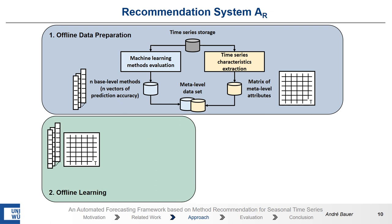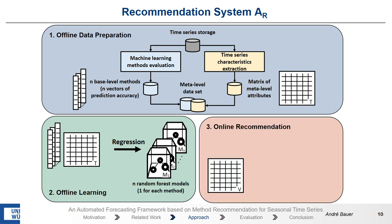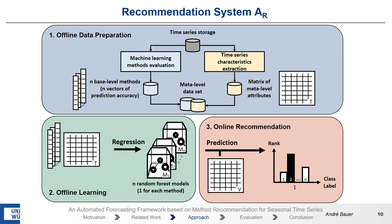The second approach is based on regression, and the idea is to model for each method its forecasting error. Therefore, we have the same input — that is the time-series characteristics and the performance of each method — and then we use regression to train n random forest models, one model for each forecasting method. And then if we get new time-series, we use the time-series characteristics to predict the estimated errors of the forecasting methods, and then we choose the method with the lowest estimated error.